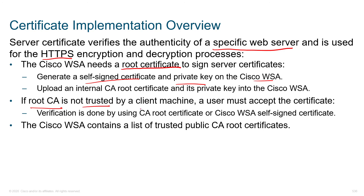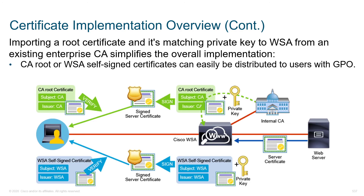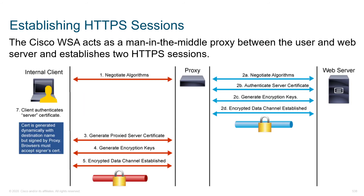If a root CA is not trusted by a client machine, a user must accept the certificate, meaning they're going to get an error. The process of importing the root certificate and the matching private key onto the WSA is not super complicated — it comes from your existing CA server. If you don't have one, there's a window within Microsoft that makes it really easy, and there are also Cisco devices that can behave as a CA server. Microsoft's CA services tend to get the job done for a lot of clients.